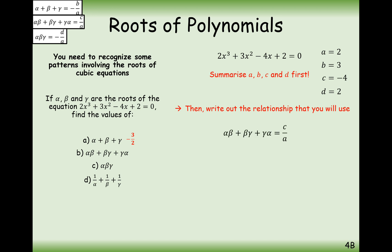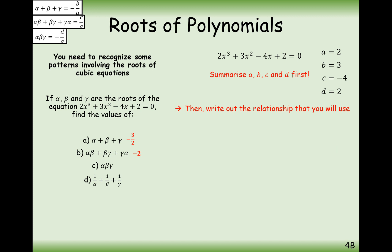For part (b), the sum of the doubles equals c/a. Plugging in c = −4 and a = 2 gives −4/2 = −2. So the answer to part (b) is −2. For part (c), αβγ = −d/a. Substituting d = 2 and a = 2 gives −2/2 = −1. So the answer to part (c) is −1.